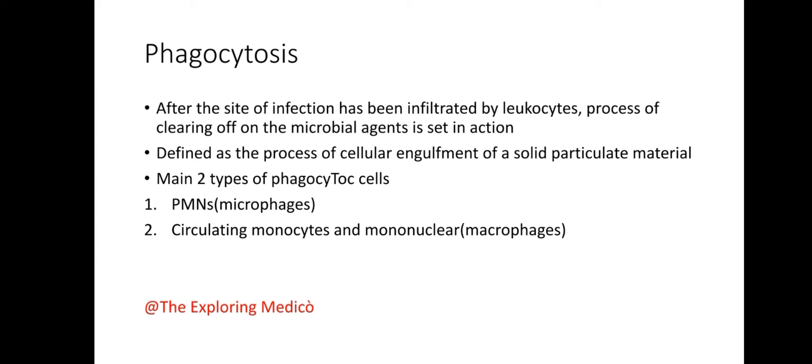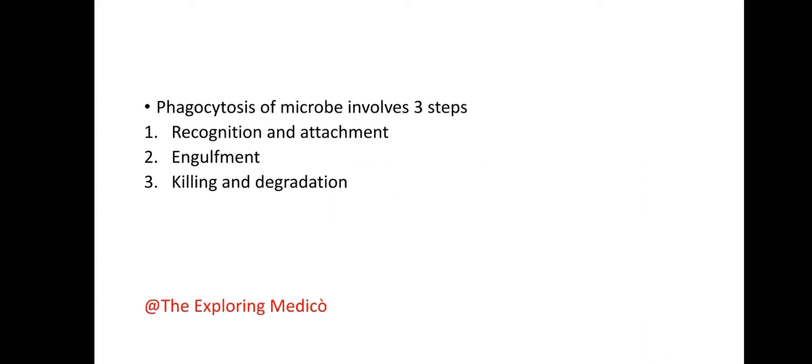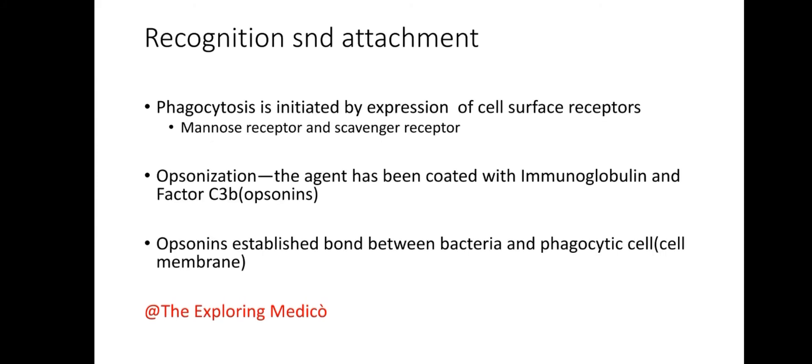Phagocytosis: after the site of infection has been infiltrated by leukocytes, the process of clearing off microbial agents is set in action. Phagocytosis is defined as the process of cellular engulfment of solid particulate material. The main two types of phagocytic cells are polymorphonuclear neutrophils and circulating monocytes. Phagocytosis of a microbe involves three steps: recognition and attachment, engulfment, and killing and degradation.